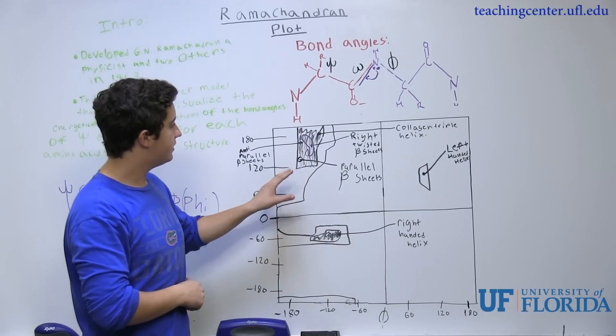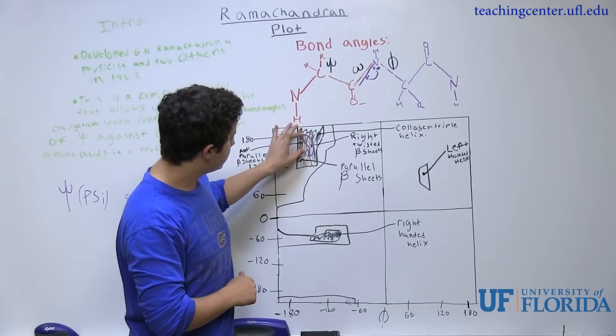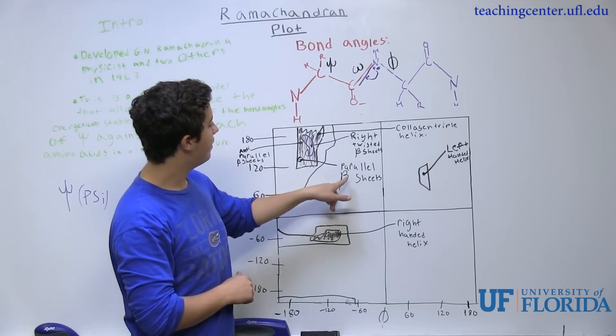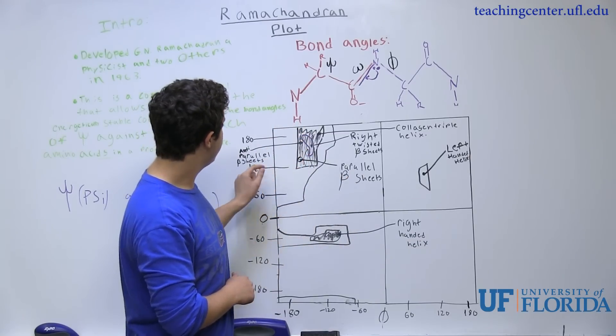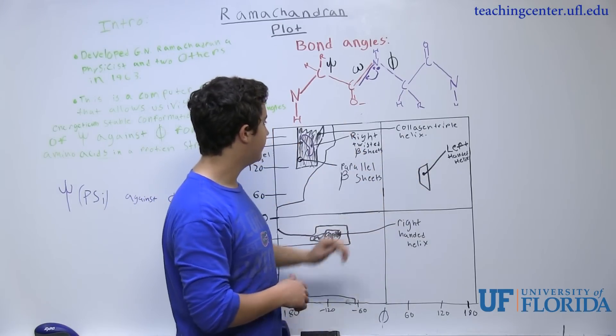So in this area, we can see the right twisted beta sheets on this little purple swiggly, the parallel beta sheets over here, the anti-parallel beta sheets here, and the collagen triple helix right here.